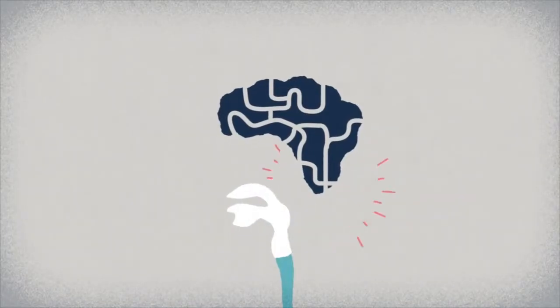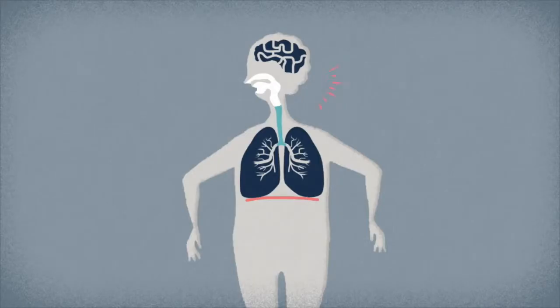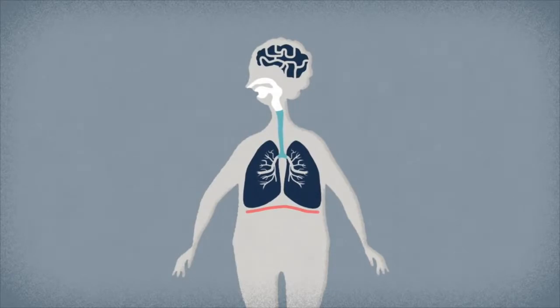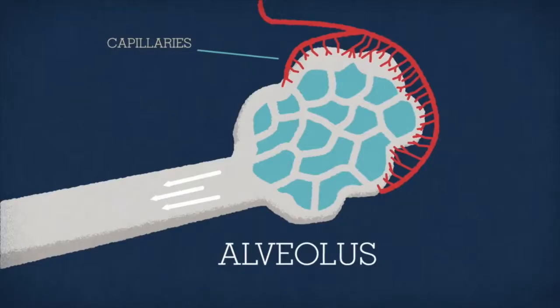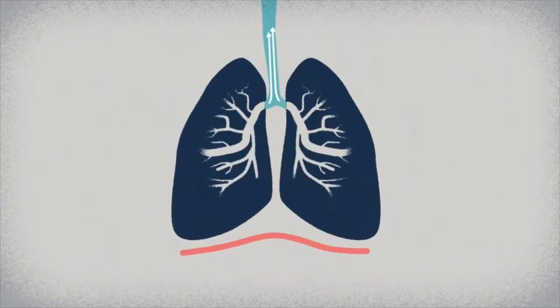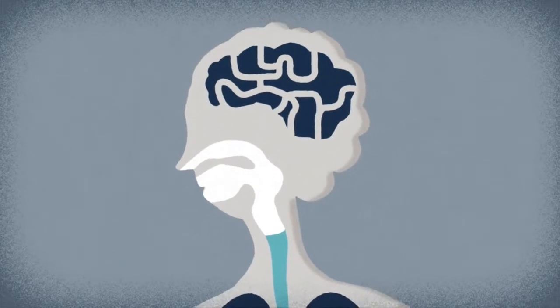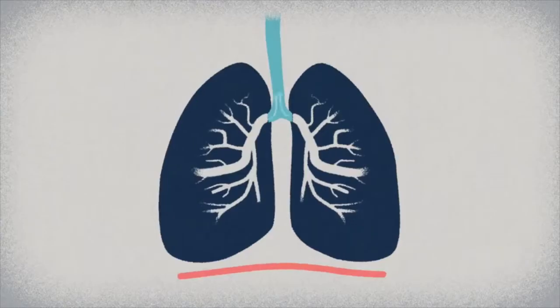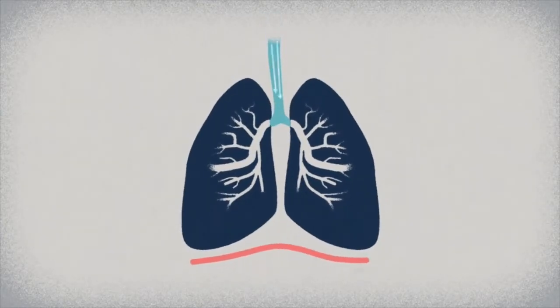The oxygen-rich hemoglobin is then transported throughout the body via the bloodstream. But what do our lungs do with all that carbon dioxide? Exhale it, of course. The autonomic nervous system kicks in again, causing the diaphragm to ball up and the intercostal muscles to relax, making the chest cavity smaller and forcing the lungs to compress. The carbon dioxide-rich air is expelled and the cycle begins again.